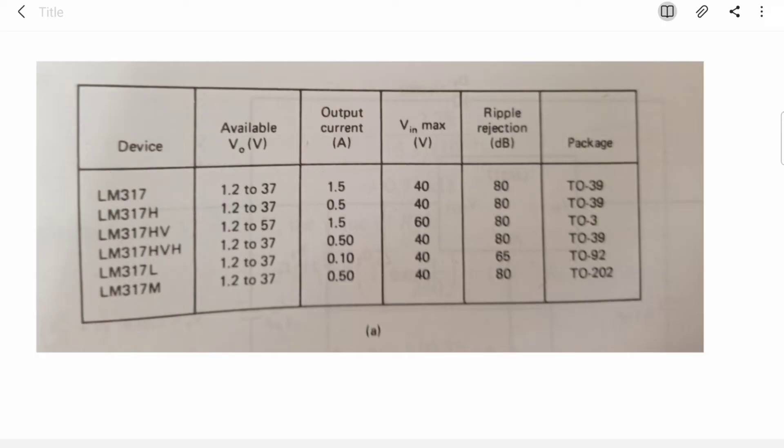As your type of IC changes, your specifications change a little bit. But basic LM317 has 1.2 to 37 volt output voltage range.